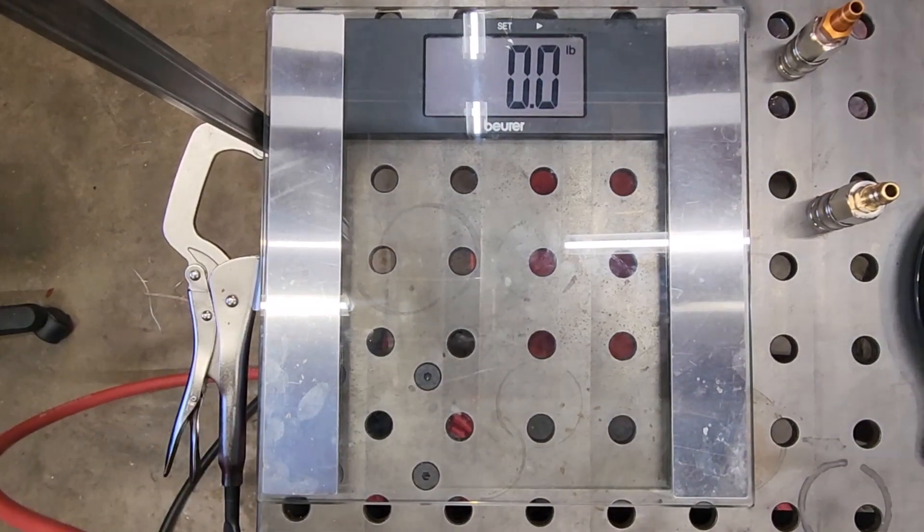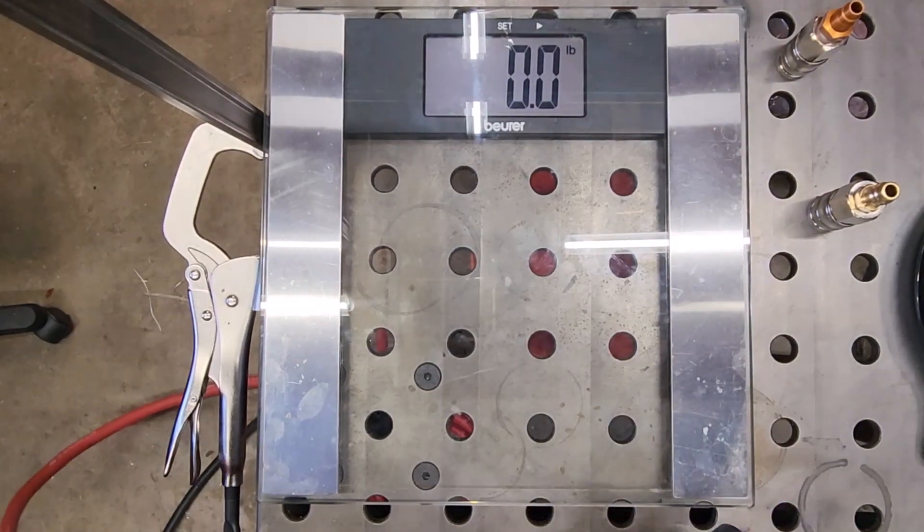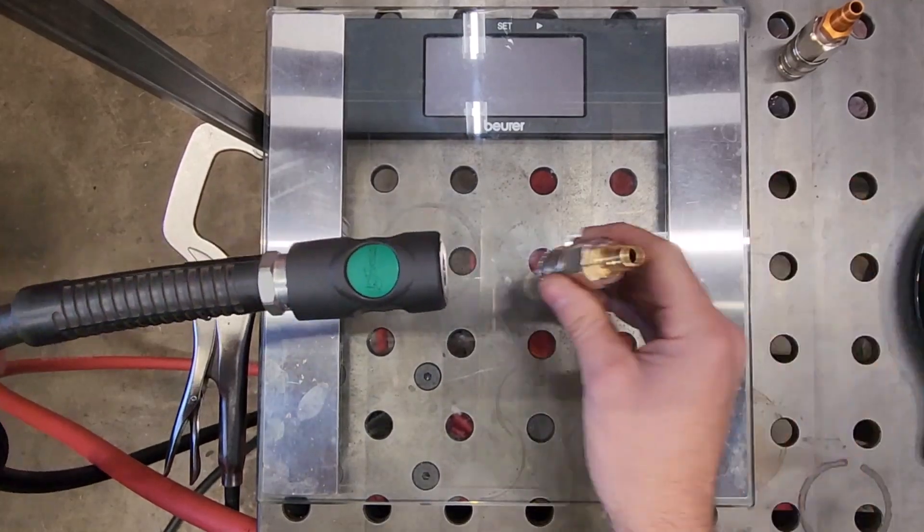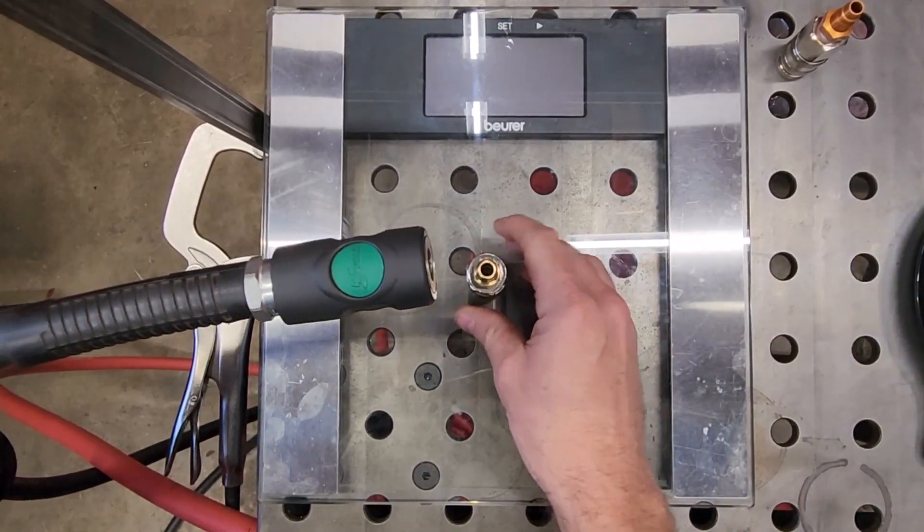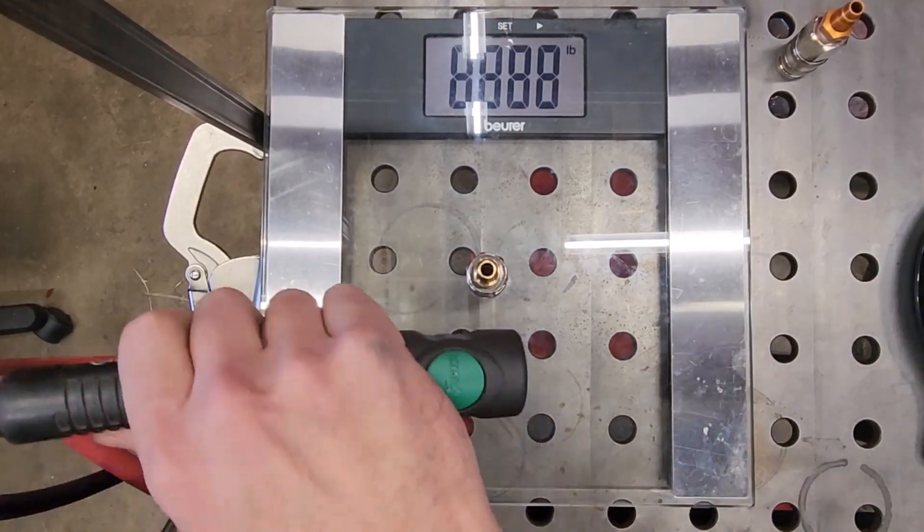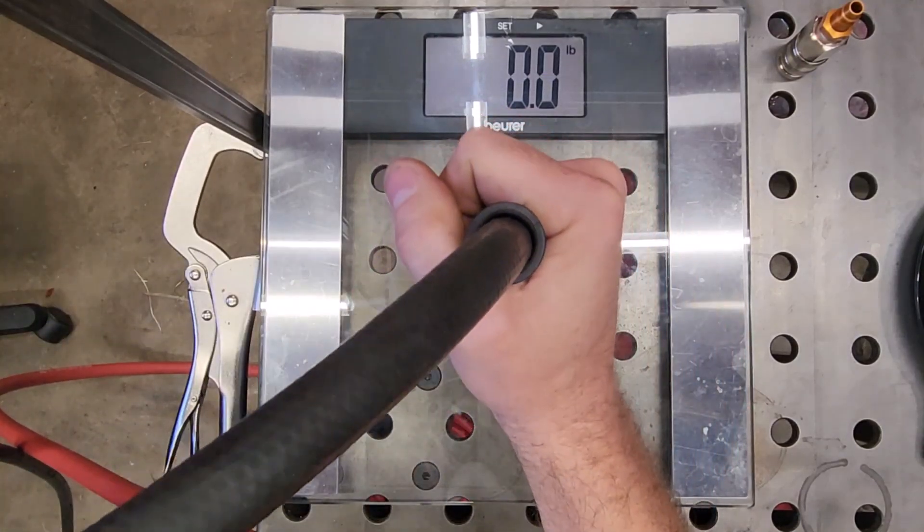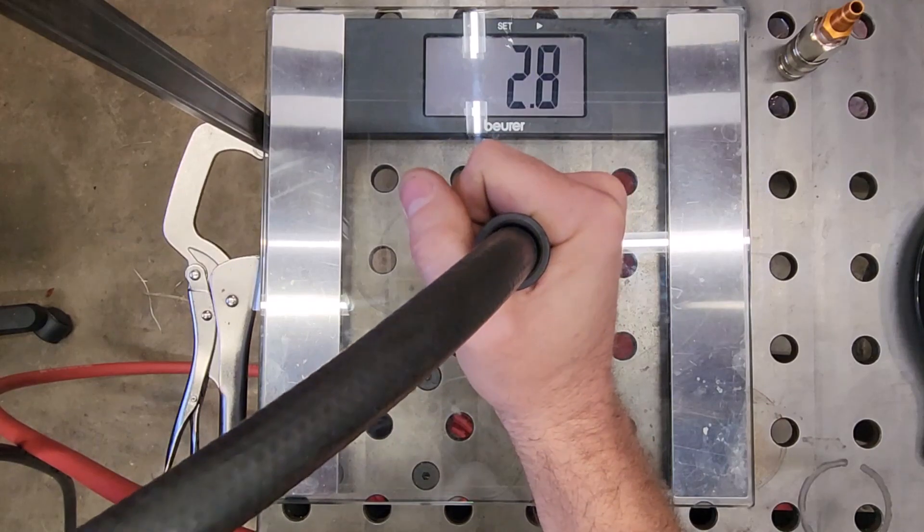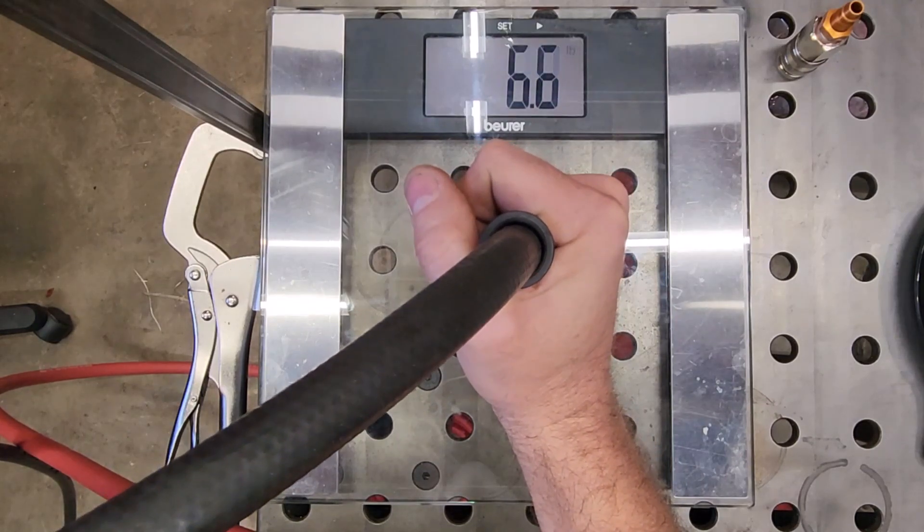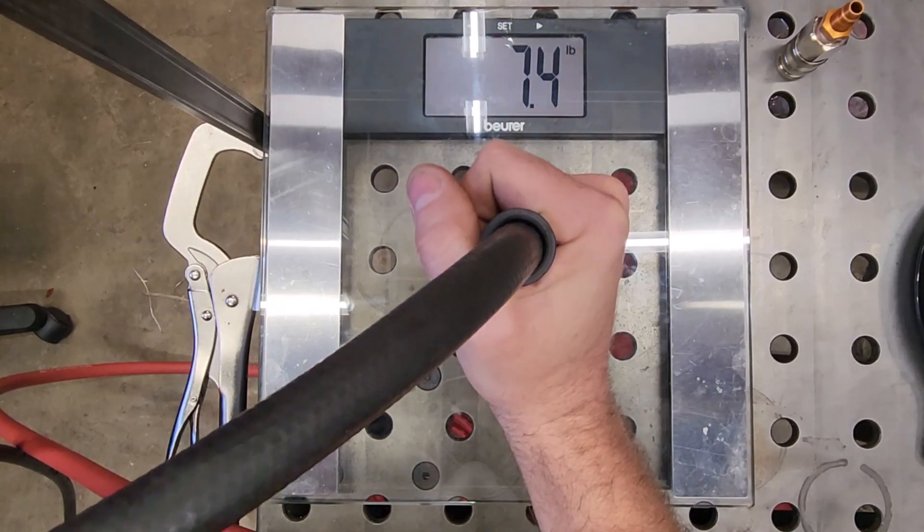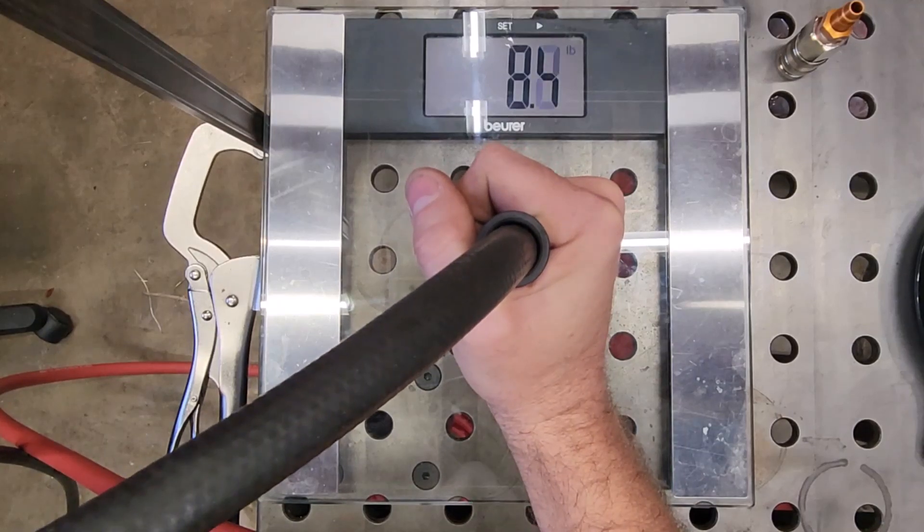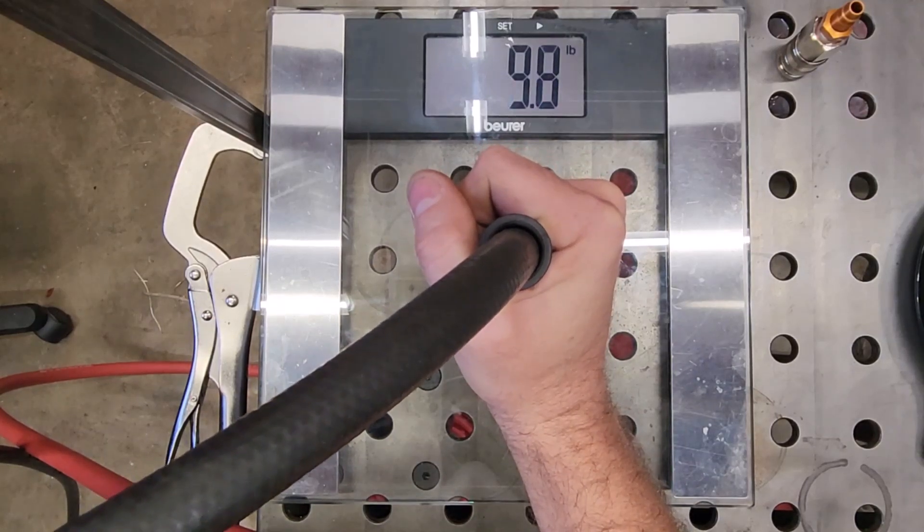Next up, we'll do the Prevo safety coupler with that same plug. Same testing methodology as far as I can reproduce it. So there's first stage at 8 pounds. Keep going.